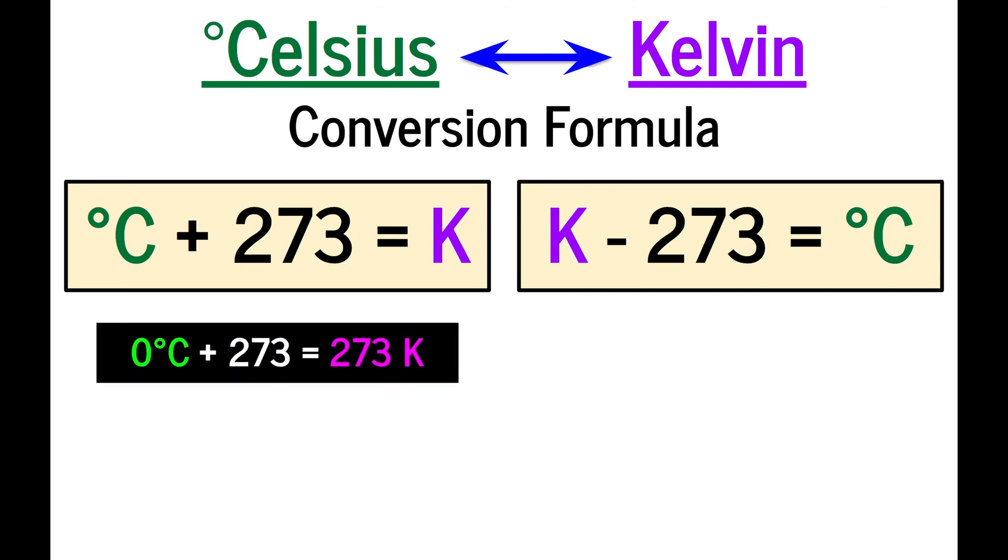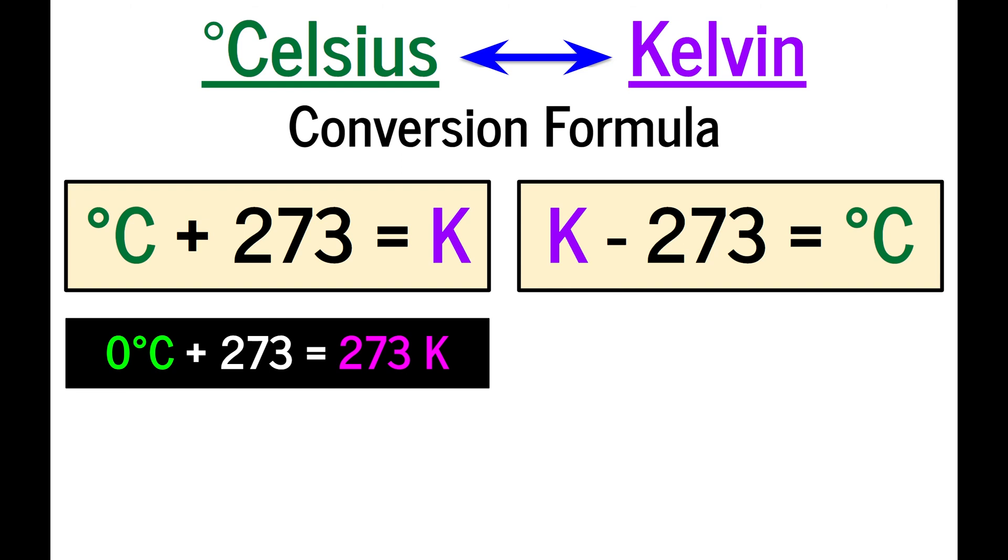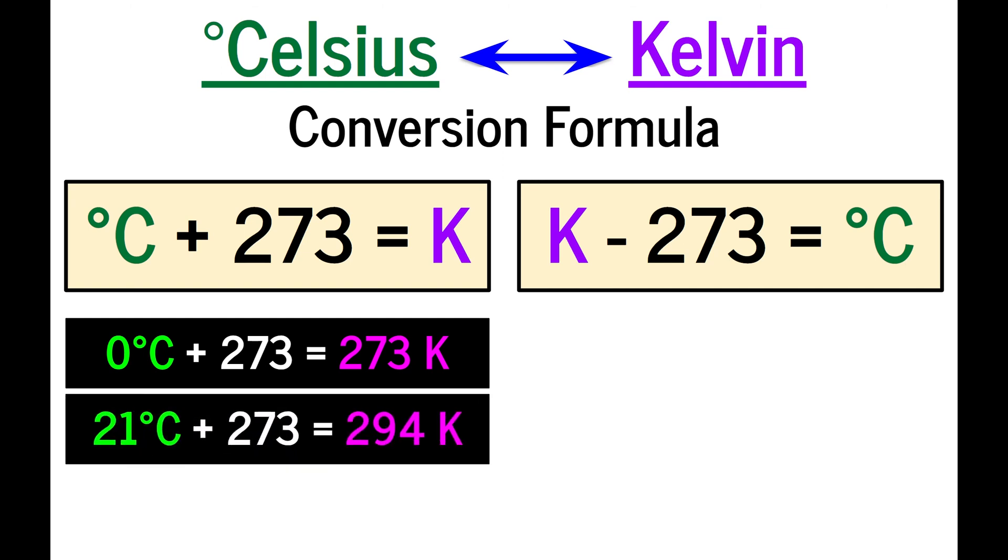We'll do three examples converting into Kelvin. The temperature at which water freezes is zero degrees Celsius. If you add 273, then you've determined that this temperature in Kelvin is 273. That's pretty easy math. What about room temperature, which in Celsius is about 21 degrees. That's about the temperature you're probably feeling right now. Add 273, and you discover that in Kelvin, room temperature is 294 Kelvin.